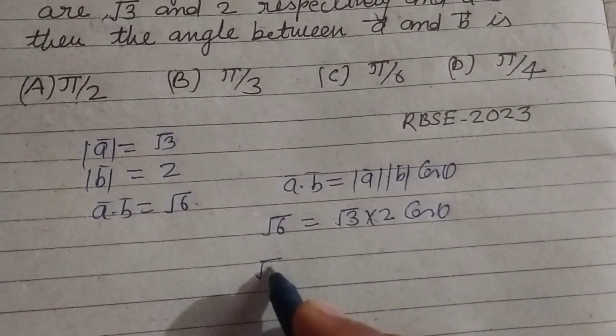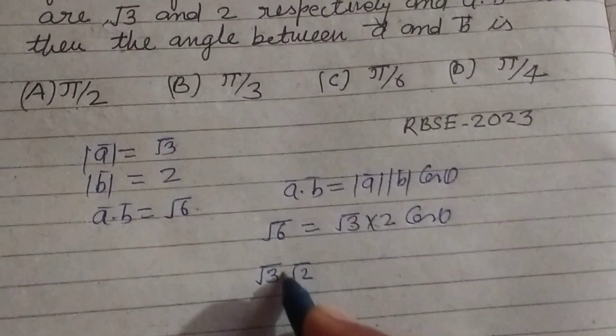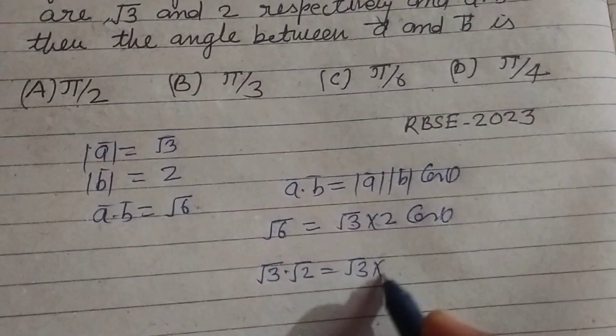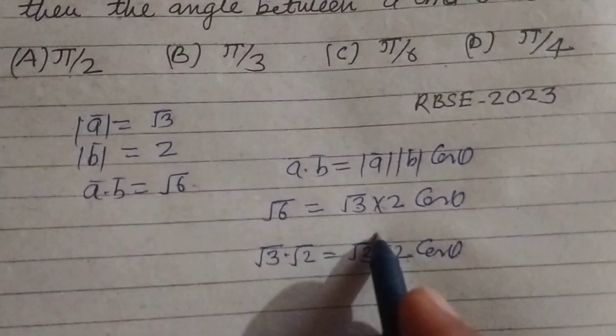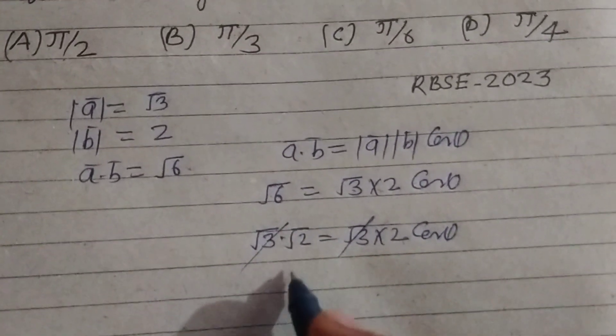√6 can be written √3 into √2, so √3 into 2 cos theta, so here √3 divided by 2.